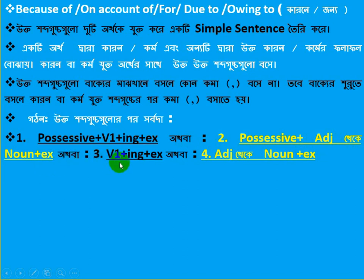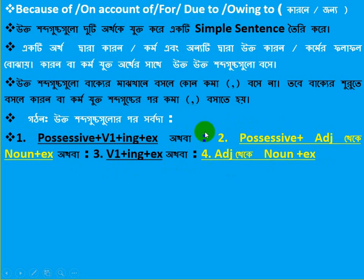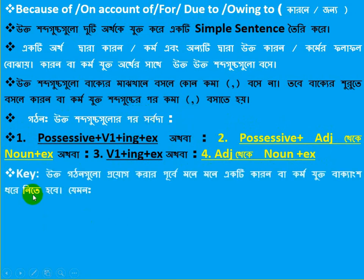Here we will learn how to complete an incomplete sentence based on because of, on account of, for, due to, owing to. You will say through a specific sentence based on because of, on account of, due to, and owing to.